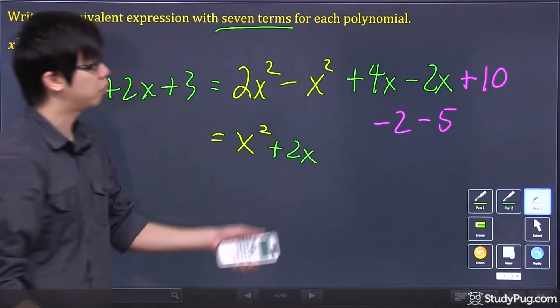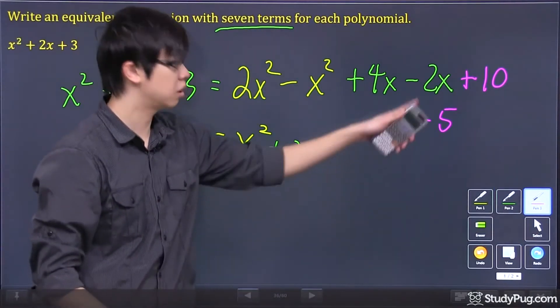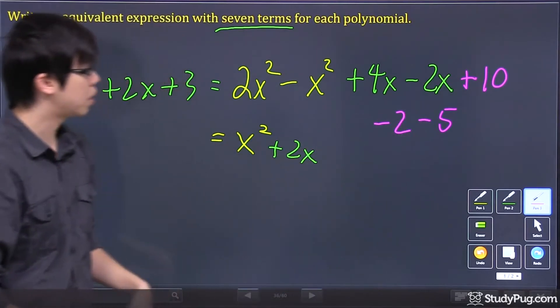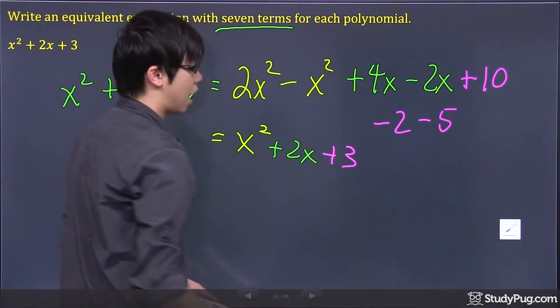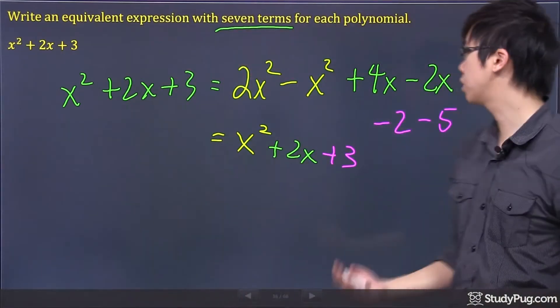And what about the last type, the constants here. 10 minus 2 minus 5. The answer is a 3. And that's what happened. You got an x squared plus 2x and a plus 3.